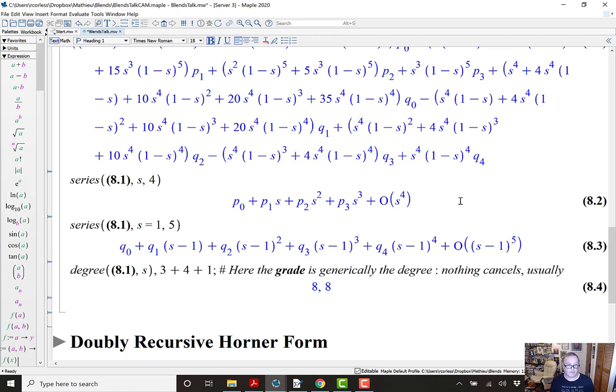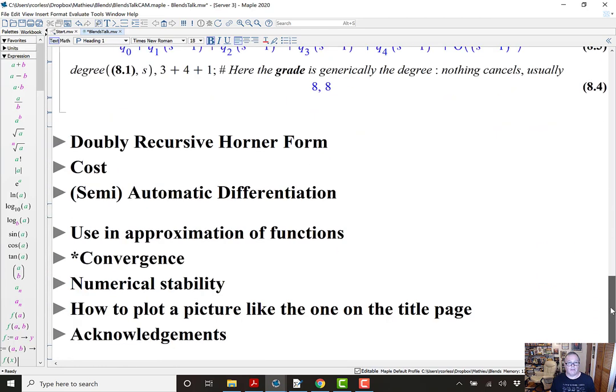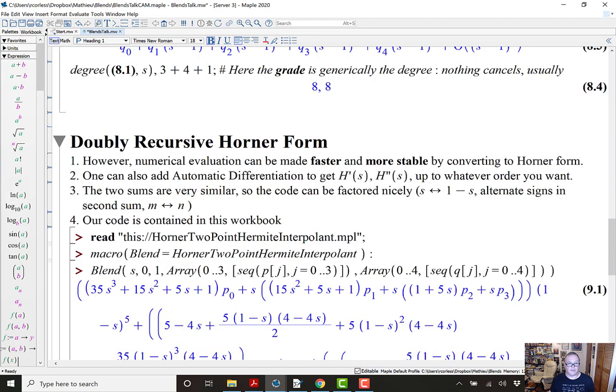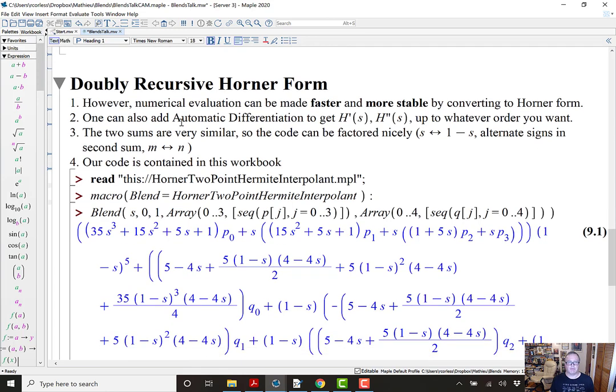We don't know what the degree is because some of the q's and some of the p's may be such that the leading coefficient of the blend actually is of lower degree. So, the degree is something that we won't know unless we specify the p's and q's numerically. Well, if that formula is so old and it's so simple, what do we need Maple for? It turns out that if you want to evaluate that formula numerically, you really should do something a little better.